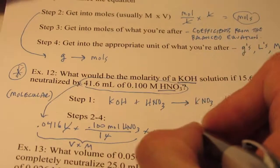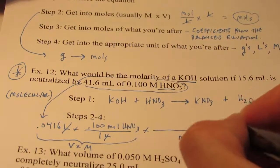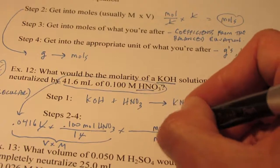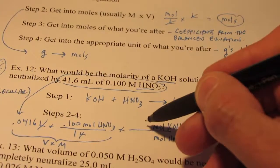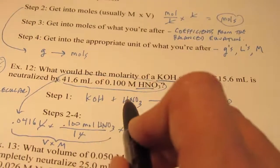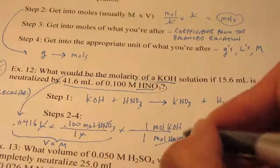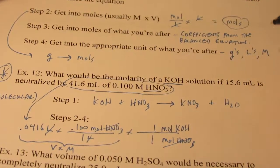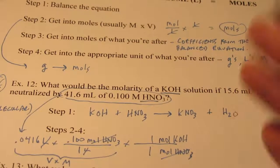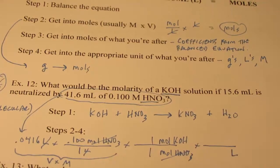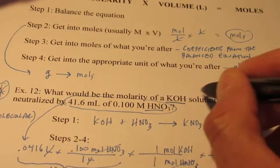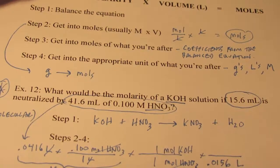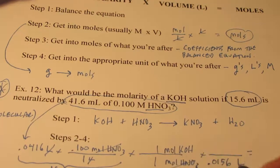Step three: go from moles of what we know to moles of what we're after, which is potassium hydroxide. Using the balanced equation, the ratio is one to one, so moles of HNO3 convert directly to moles of KOH. Step four: get into the appropriate unit — molarity, which is moles per liter. I have the moles; I just need the volume of KOH, which is 15.6 mL = 0.0156 liters. So I'll have moles per liter.